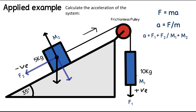Starting with the easier part: force 1 is simply mg, which is 10 kilograms multiplied by 9.81, giving us 98.1 Newtons.